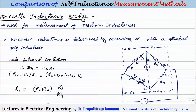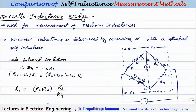Let us start with the Maxwell's inductance bridge, which is used for measurement of medium inductances. In this case, the unknown inductance is determined by comparing with a standard self-inductance. The variable resistance and variable reactor are the standard values. By varying these, we get the balance of the bridge.